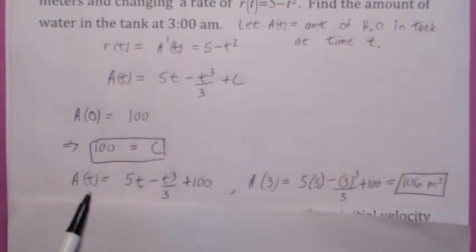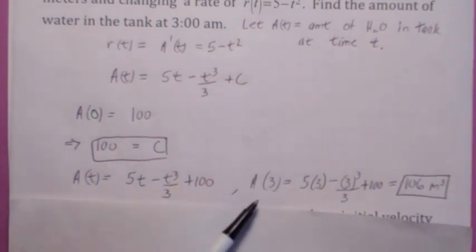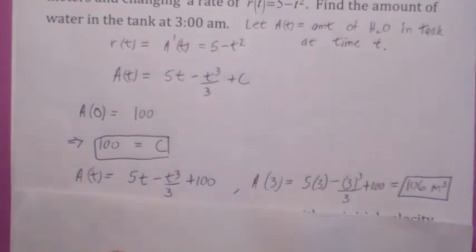So then you got the function now, the amount of water present after t hours is this. Plug in three, because they'll ask you how much is there at 3 a.m.? When you plug in three, you get 106 cubic meters. Nice.